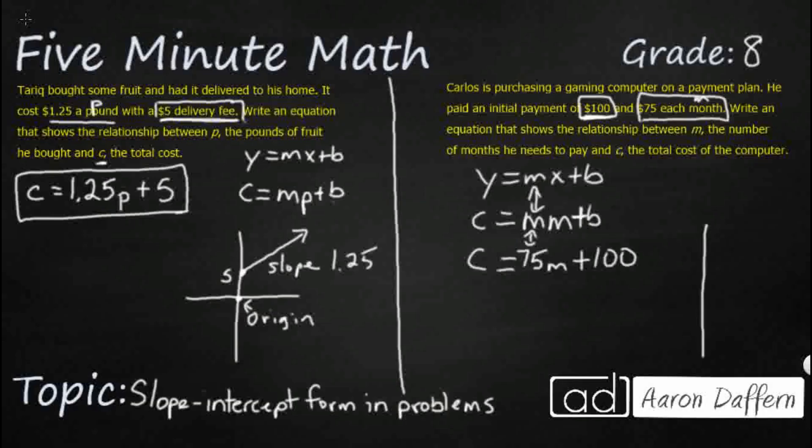Once again, it is non-proportional because it does not pass through the origin. If we put a zero right there at zero months, we're starting at this $100 right here. We're moving up this way at $75 a month. And that is going to be my slope. And that's how you can write these equations in slope-intercept form.